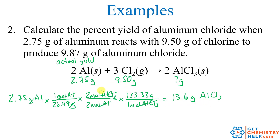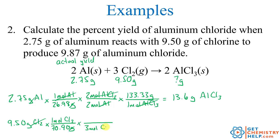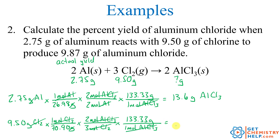Now for the 9.50 grams of chlorine: converting to moles using 70.90 grams per mole. Relating chlorine to the product, for every 3 moles of chlorine we can produce 2 moles of aluminum chloride. Then converting to grams using the same molar mass of 133.33 grams per mole of aluminum chloride gives 11.9 grams of aluminum chloride.